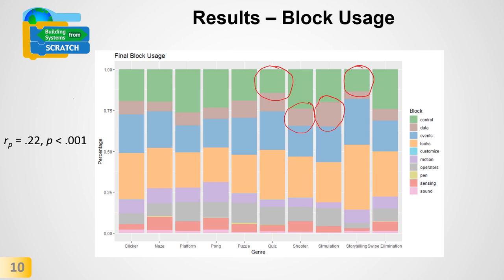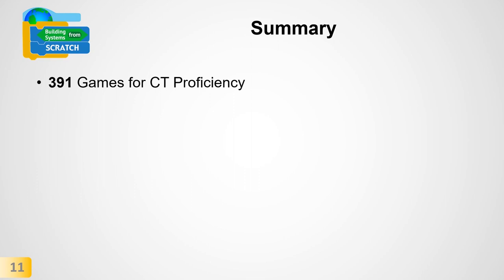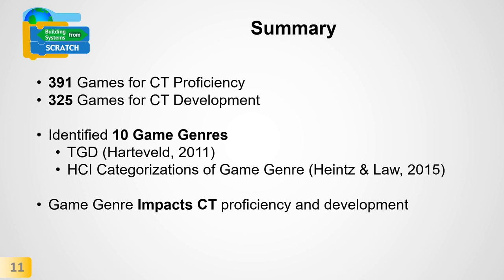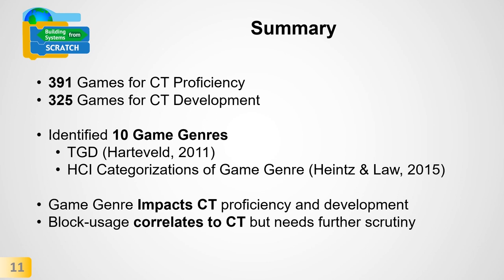Future work should also carefully consider how a broader understanding of block usage can inform the redesign of the Dr. Scratch metrics to make them more context- and design-sensitive. To recap: we used Dr. Scratch to assess 391 student-designed games for CT proficiency and monitored CT development in 325 games. We identified 10 game genres using the triadic game design model combined with the HCI categorization by Heinz and Loh. Results show that game genre impacts CT proficiency and development, and that block usage correlates to CT but needs further scrutiny.